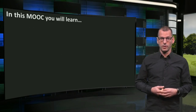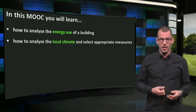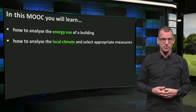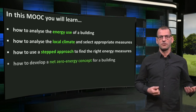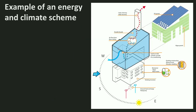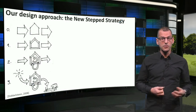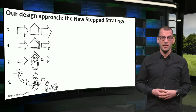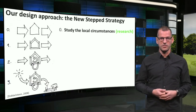In this MOOC you will learn how to analyze energy use of a building, how to analyze the local climate and select appropriate measures, how to use a stepped approach to find the right energy measures, and how to develop a net zero energy concept for a building. Such a concept looks like a scheme that explains the energy and climate system for the building. Our design approach is the NEW STEP strategy, as depicted by the sketch below. It starts with a proper study of the local circumstances: research.